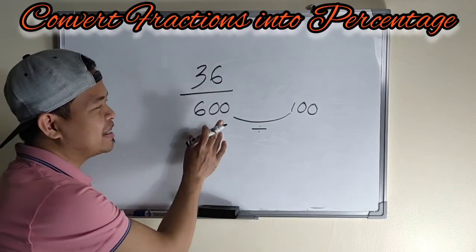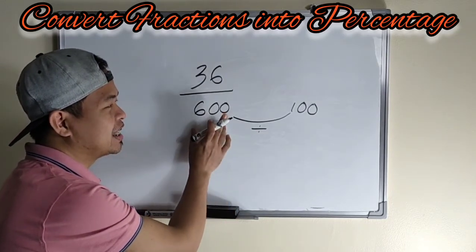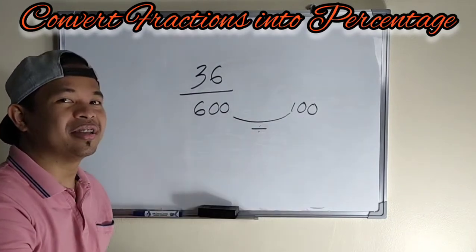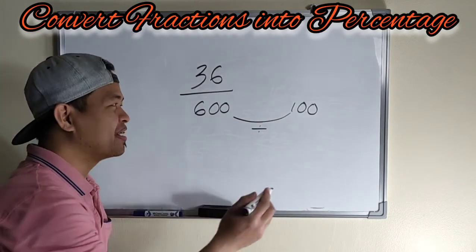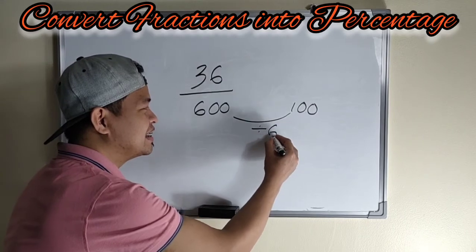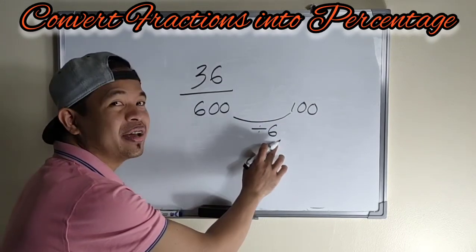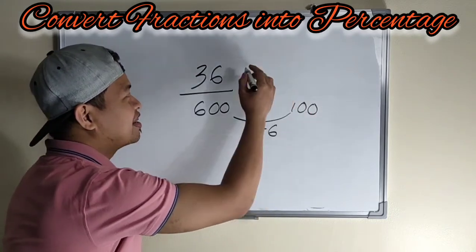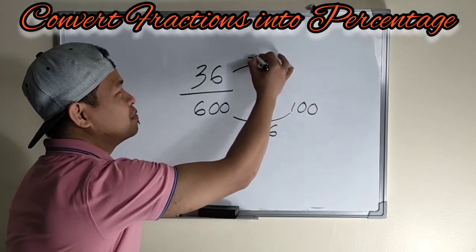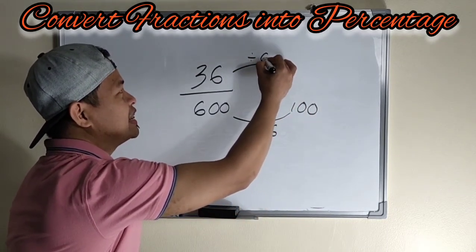So ano daw yung pwede natin i-divide sa 600 to get 100? So we can divide 6 or we can use 6. 600 divided by 6 is 100. Ganon din po sa taas. Divided by 6.